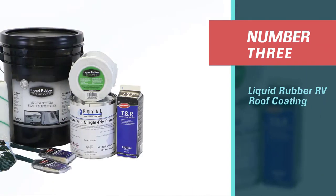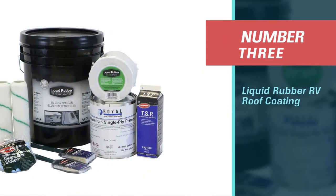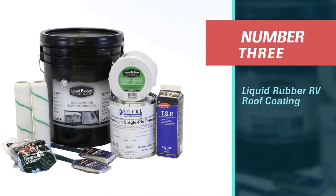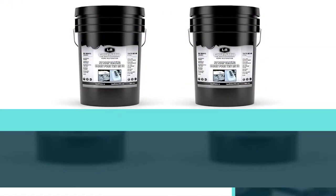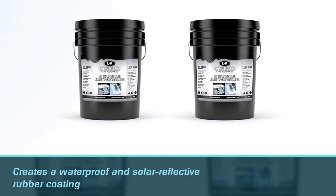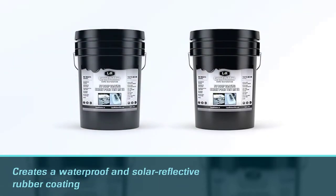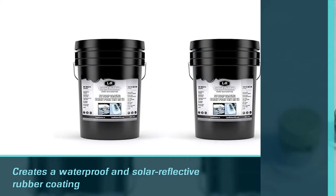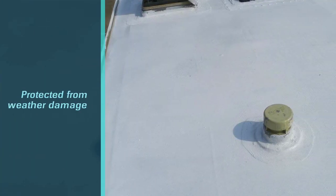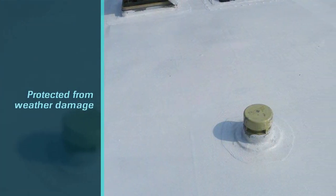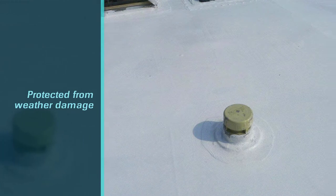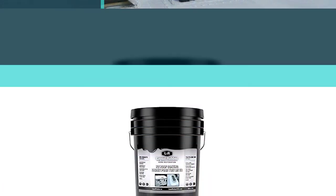Number three: Liquid Rubber RV Roof Coating. A leaky RV roof can quickly cause extensive damage to the RV's interior, but Liquid Rubber's roof coating creates a waterproof and solar reflective rubber coating over your RV's rubber or metal roof, which should keep it cool during the summer and protected from weather damage during the entire year.